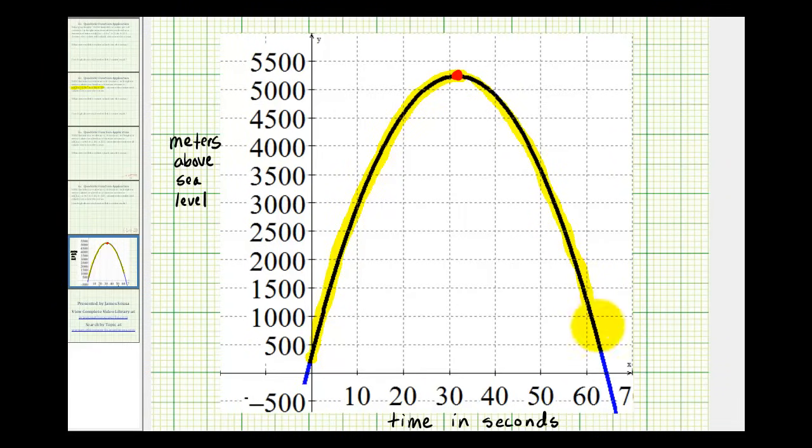And when the height reaches zero, that would be when the rocket splashes into the ocean, which would be this point here, which would be the x-intercept. So to find how long it takes for the rocket to splash into the ocean, we want to find the x-intercept. And to find the maximum height, we want to find the y-coordinate of the vertex. So let's go back and do that.